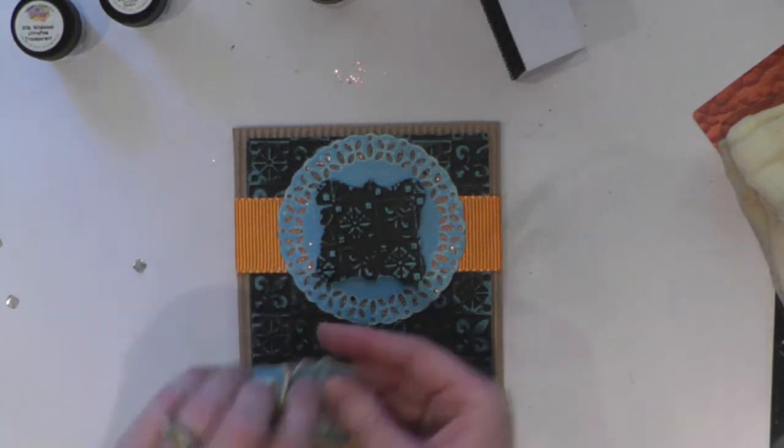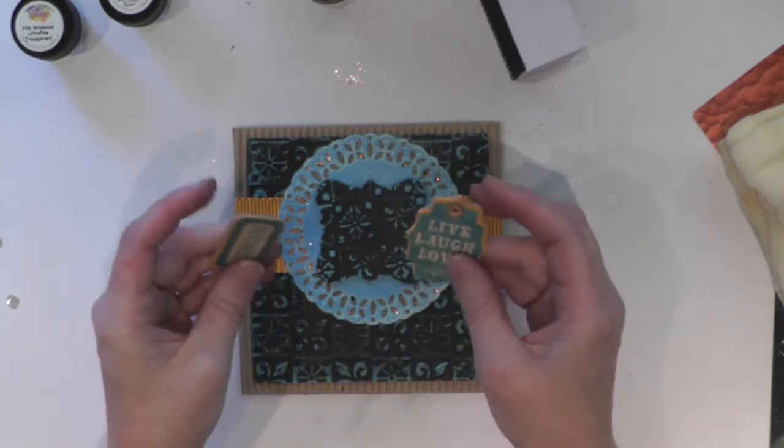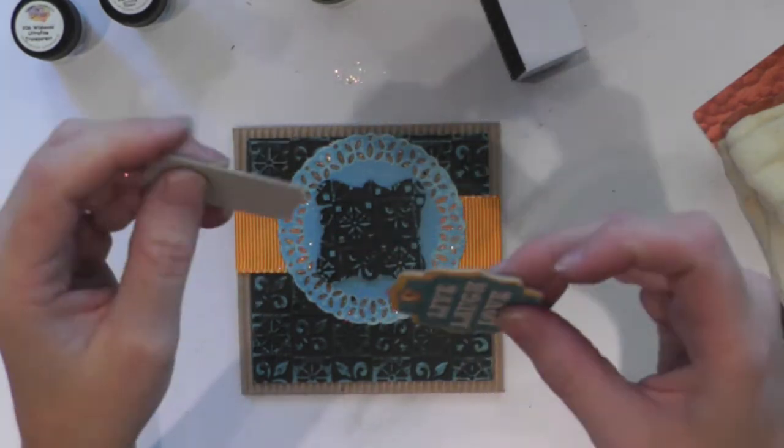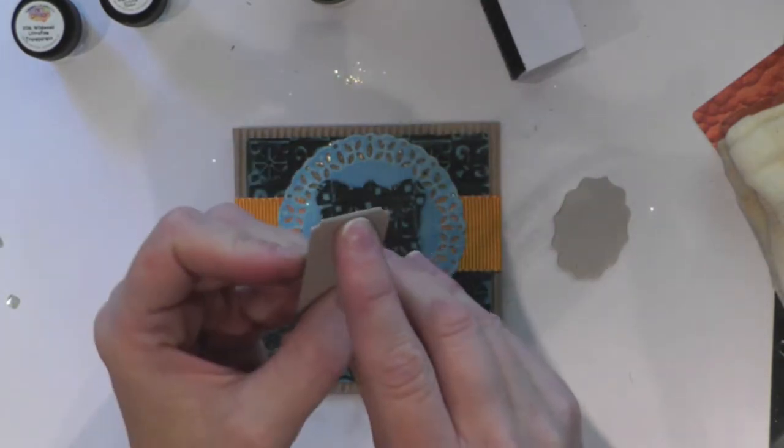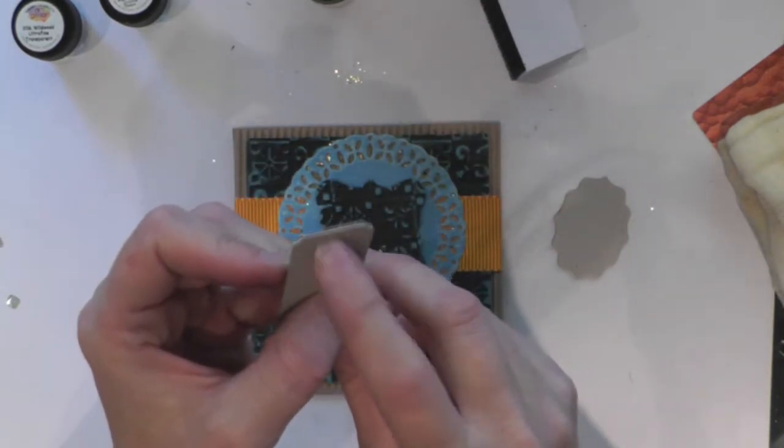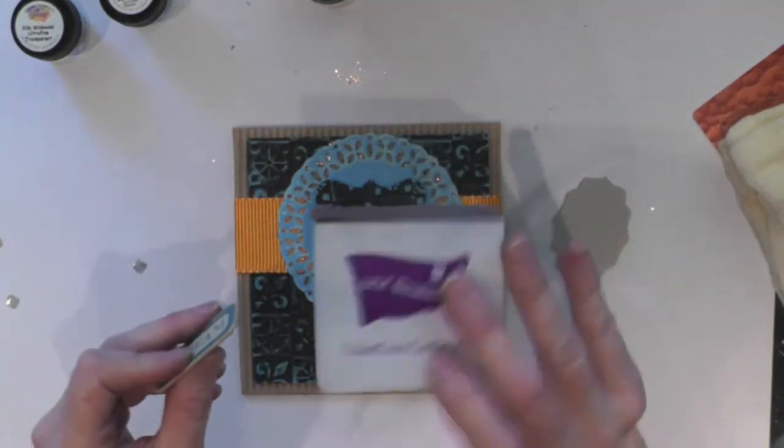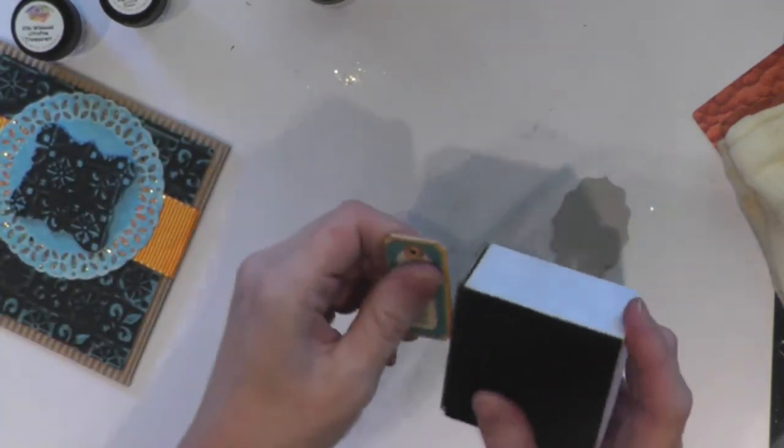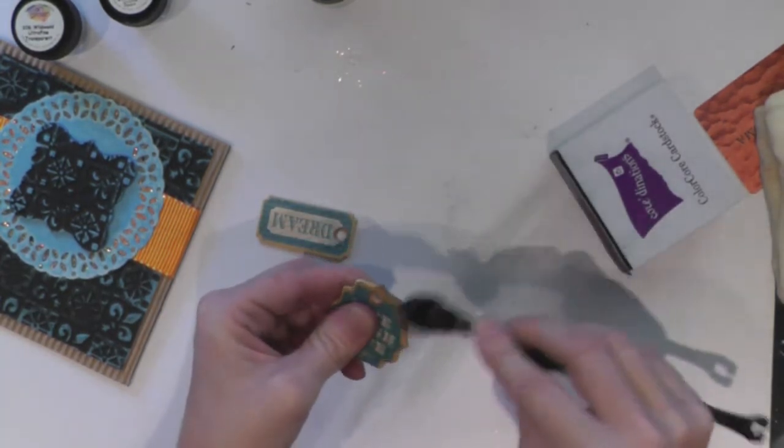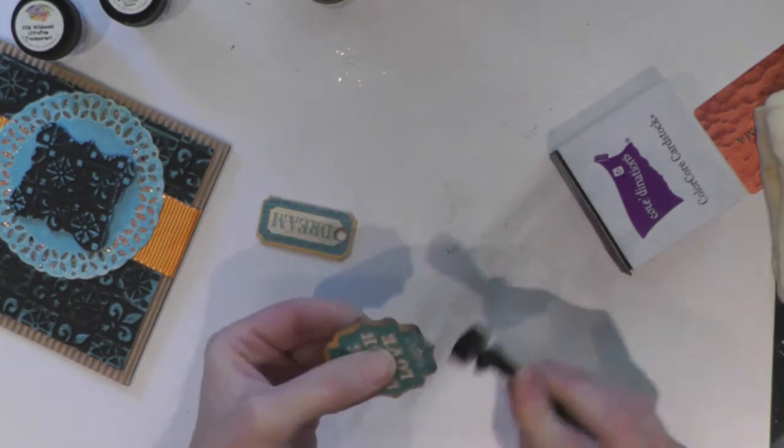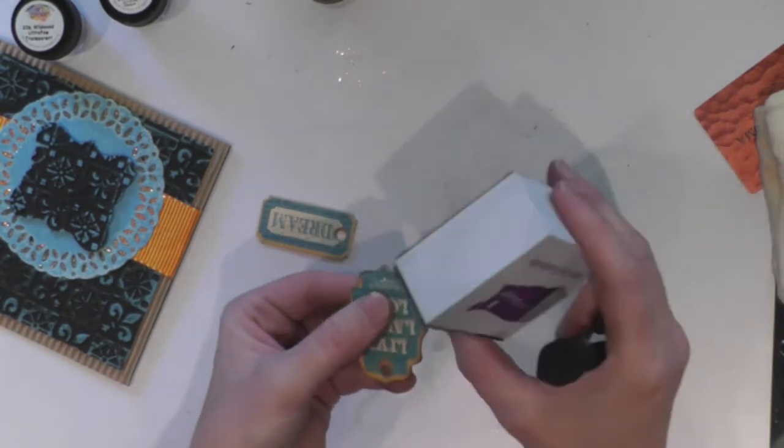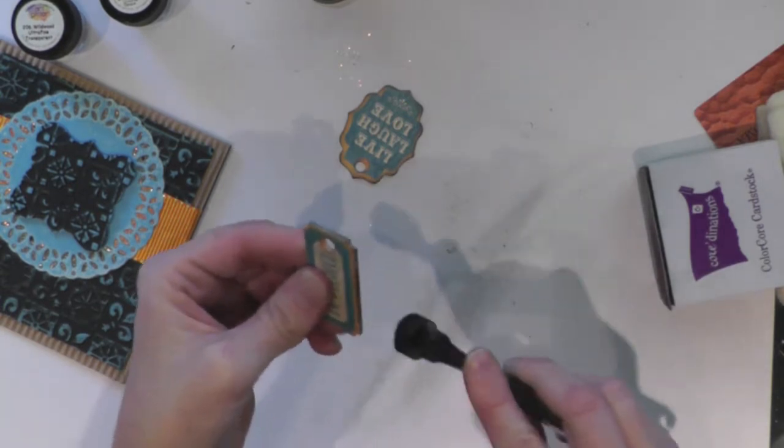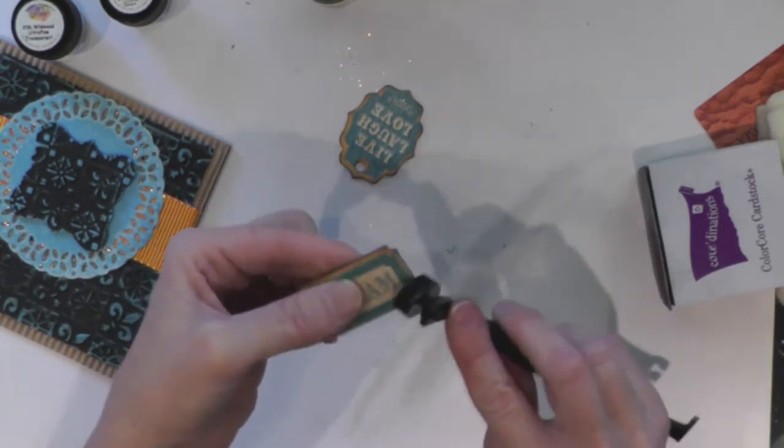So now for my focal pieces, I've got a couple of Graphic 45 chipboards. You'll notice when you pop open your chipboard that you always have these, I don't know what the technical term for them is, but I call them nubbins. There's little nubbins on the end where the chipboard was attached to the die cut. So I just take my Coordinations block and I'm just going to go ahead and sand those off. Sometimes those little nubbins pop up on you after you think you've killed them.